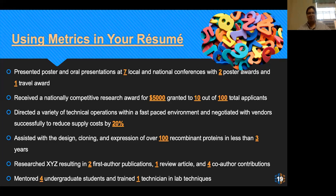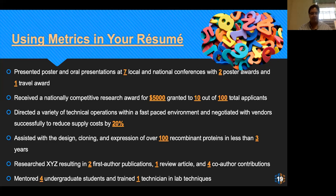Another important thing is using metrics. Resumes are limited on space, so instead of listing every single conference that you went to, you can say something like 'presented poster and oral presentations at seven local and national conferences with two poster awards and one travel award,' or 'researched XYZ resulting in two first-author publications, one review article, and four co-authored contributions.' This is for your resume — on your CV you list the whole thing out. On a resume, take advantage of using numbers. It will really help you and it will save space, especially if you have a lot to talk about.